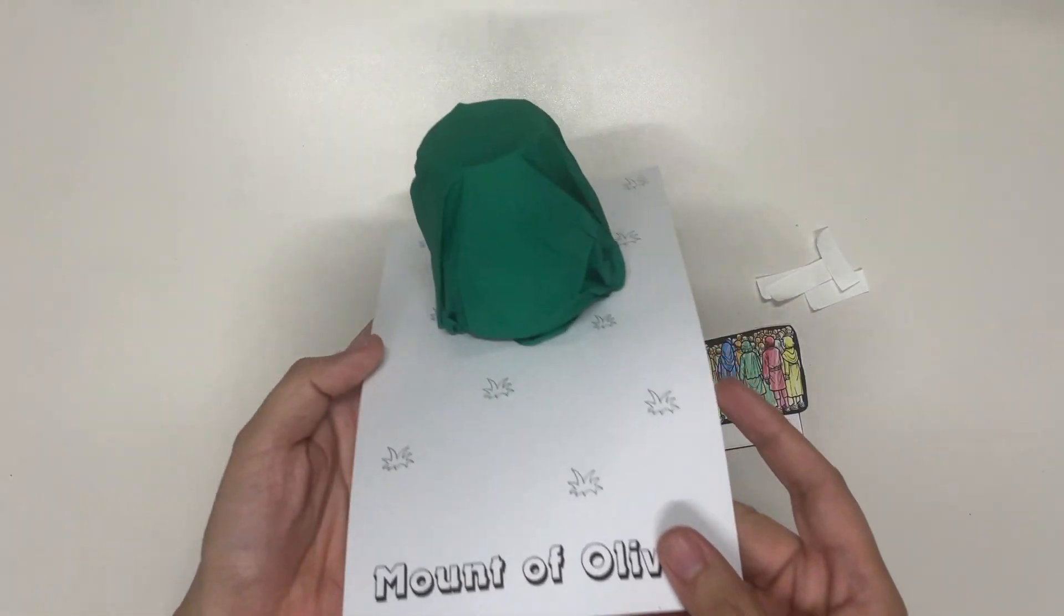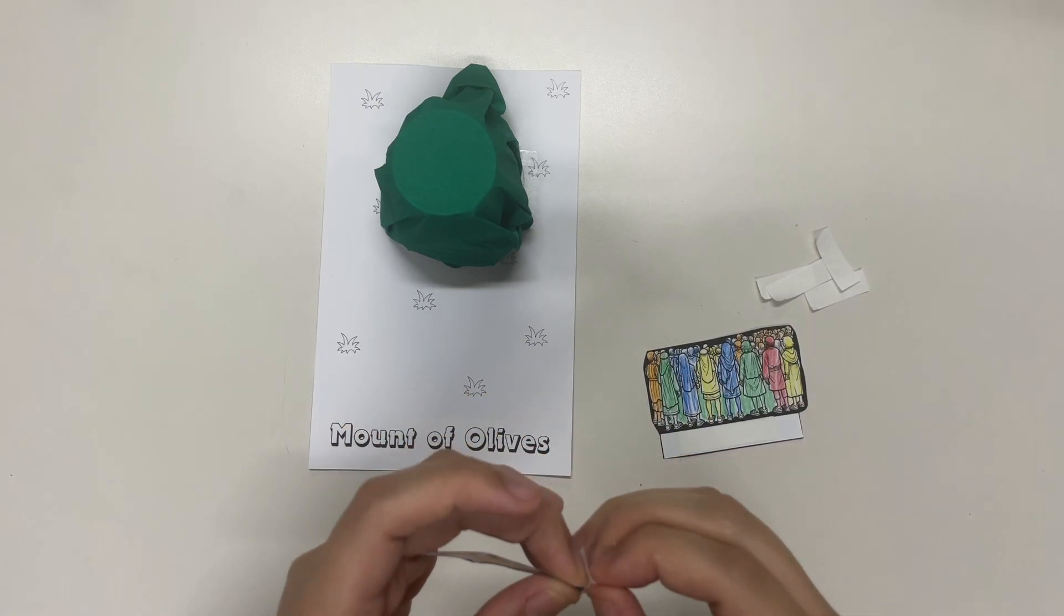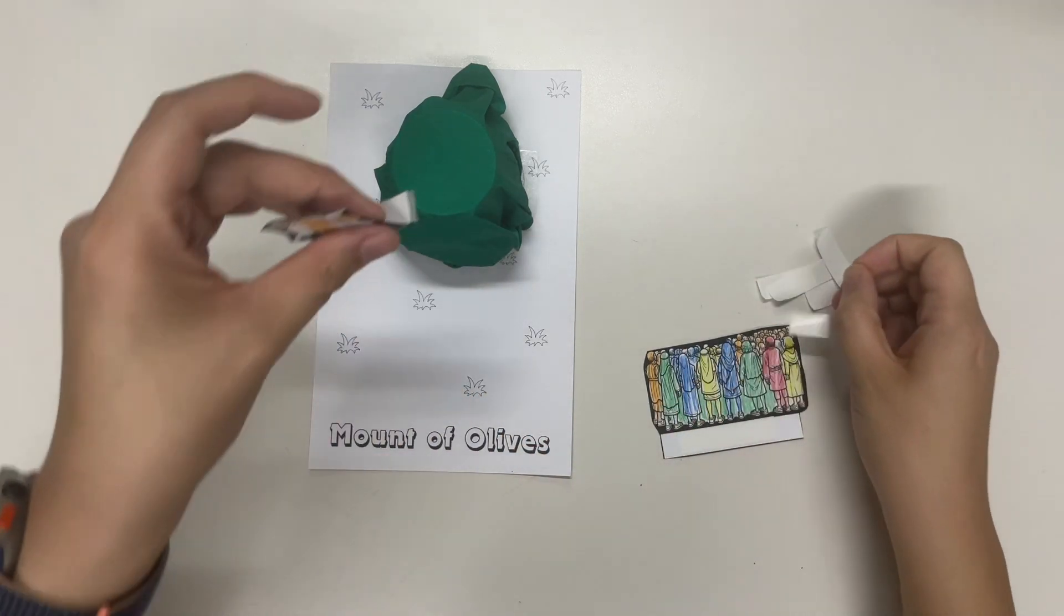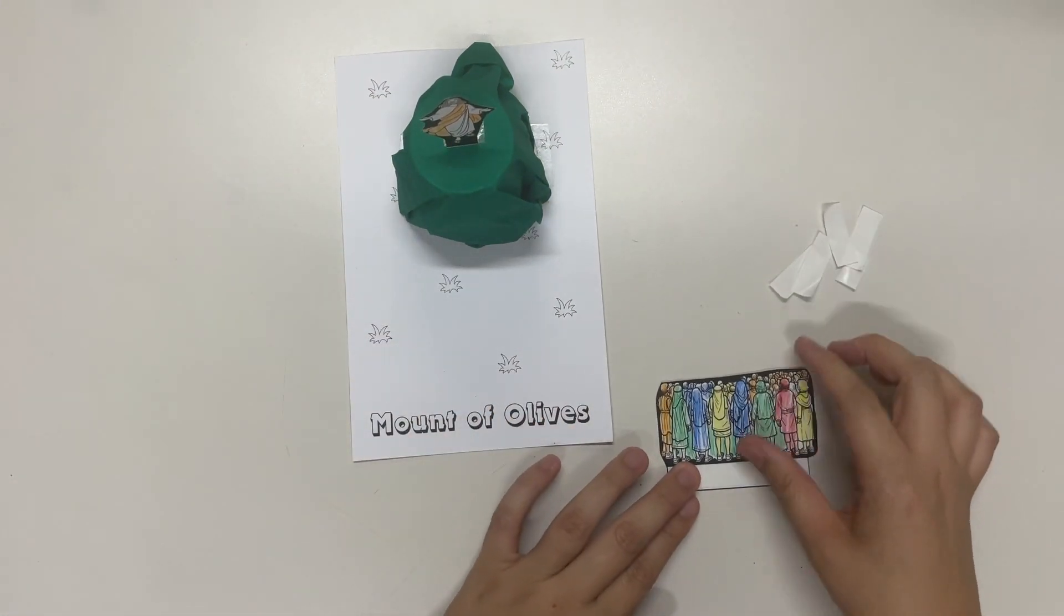Next, we can place our elements on the mountain and on the base card. First, let's remove the double-sided tape film that's attached to Jesus ascending and let's place him on top of the mountain.